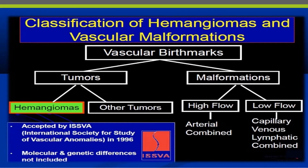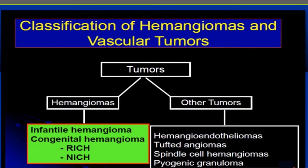The classification of hemangioma and vascular malformations accepted by the International Society for the Study of Vascular Anomalies in 1996 classifies vascular birthmarks into two groups: tumors and malformations. Malformations are classified into high flow — mainly arterial — and low flow — capillary, venous, lymphatic, or combined. Tumors include hemangiomas and other tumors such as hemangioendothelioma, tufted angiomas, spindle cell hemangiomas, and pyogenic granuloma.